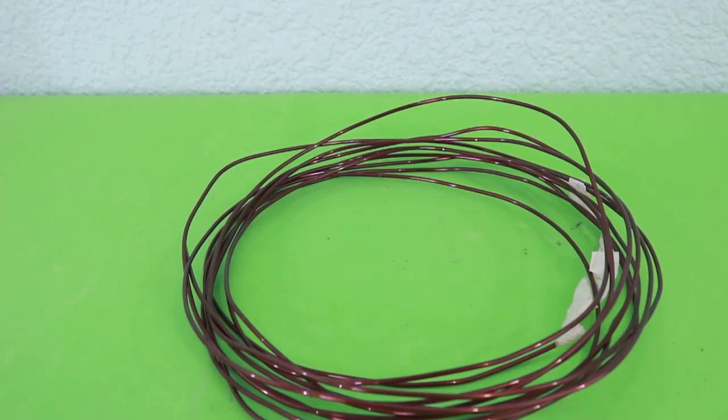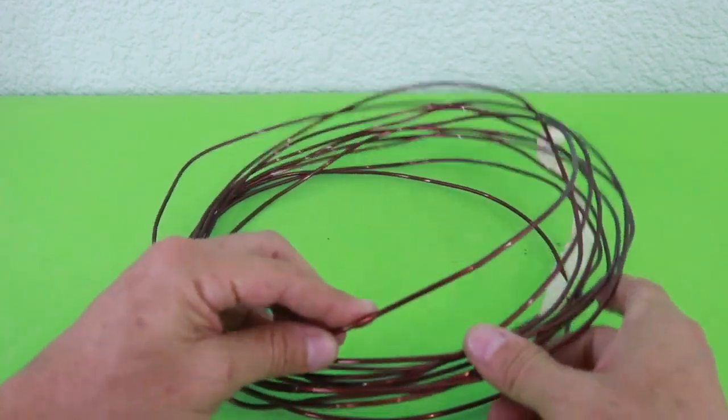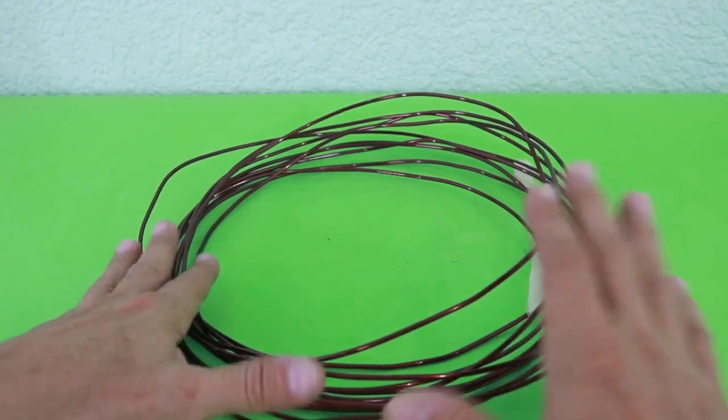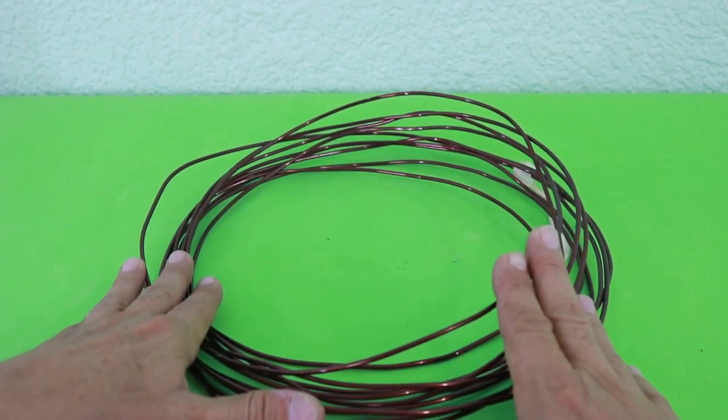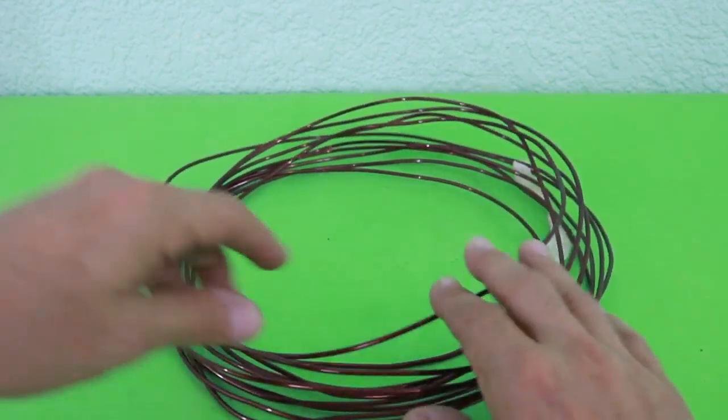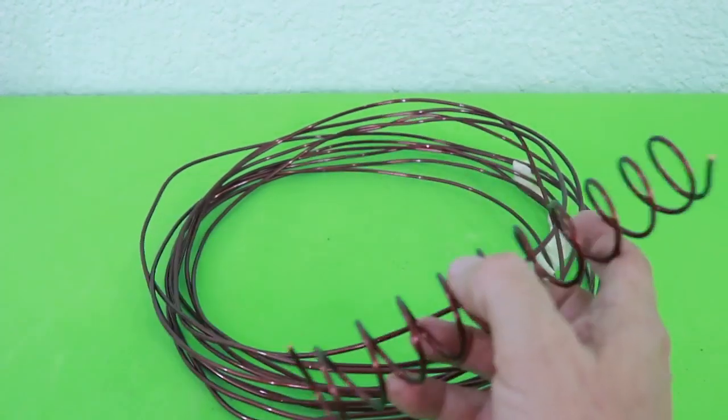For the spiral I used magnet wire. This is gauge 8 I think. You can use any kind of wire but magnet wire, since it is made of copper, has the advantage that you can bend it easily. So the spiral is made of this wire.